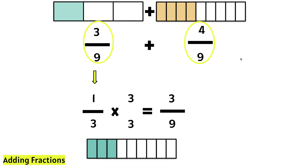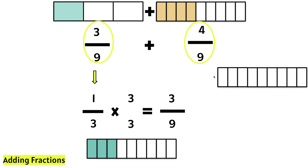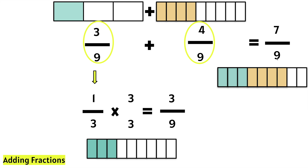Now we can add the fractions. We have 3 ninths plus 4 ninths. We know that 3 plus 4 is 7, and we are working with ninths. So, 3 ninths plus 4 ninths is equal to 7 ninths.